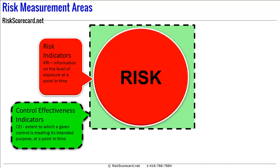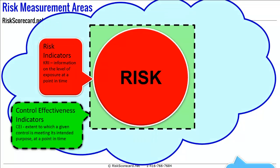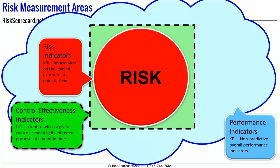The third type is a non-predictive measure. They typically are what you might think of as performance indicators, or KPIs. These are non-predictive measures about the overall organization's performance, and it's possible that if these measures go out of expected levels, it may indicate a risk is occurring that you might not have initially predicted.